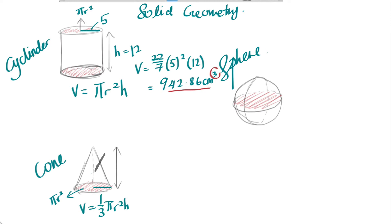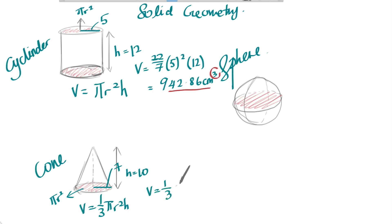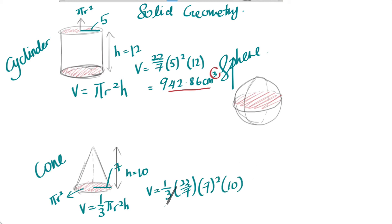R is also the radius. If given the radius is 7 and the height is 10, substitute everything in: r is 7, squared, h is 10. Press the calculator and you'll get 513.33 cm³. Again, remember to write the cube unit or else they will not accept your answer.